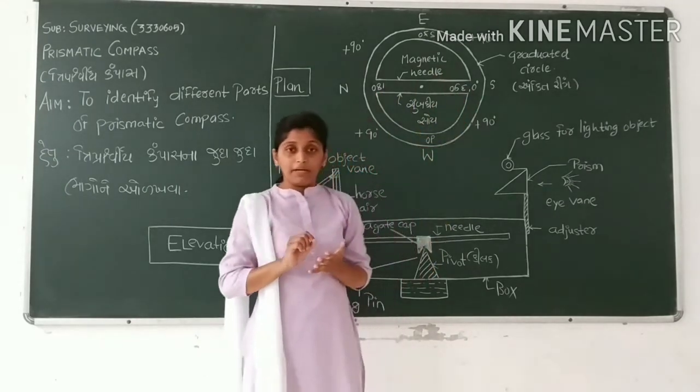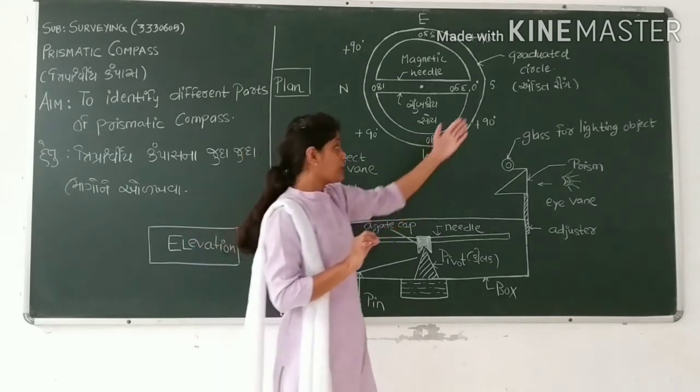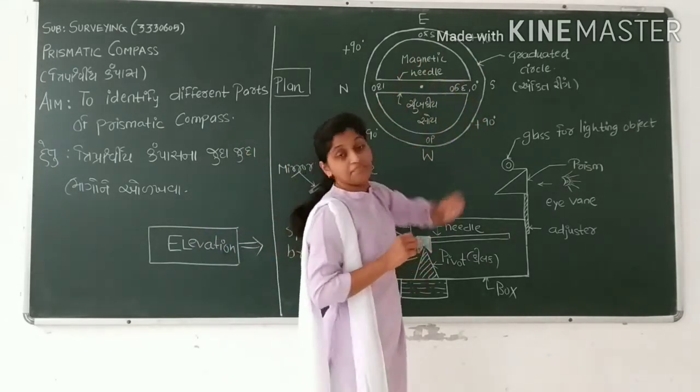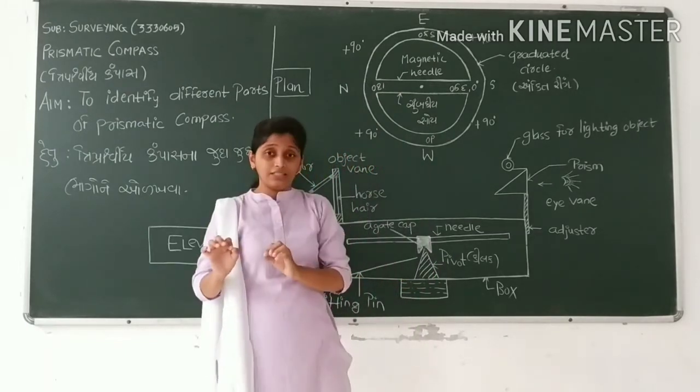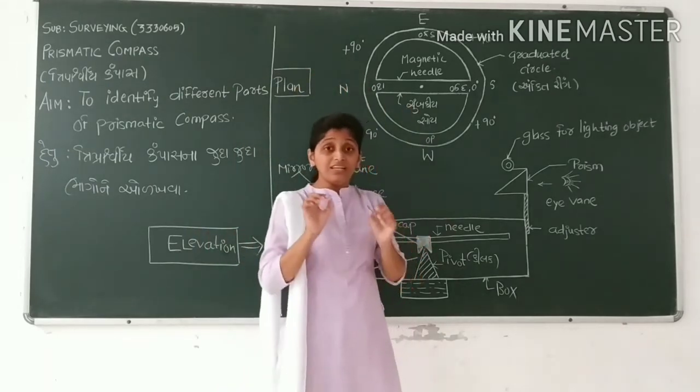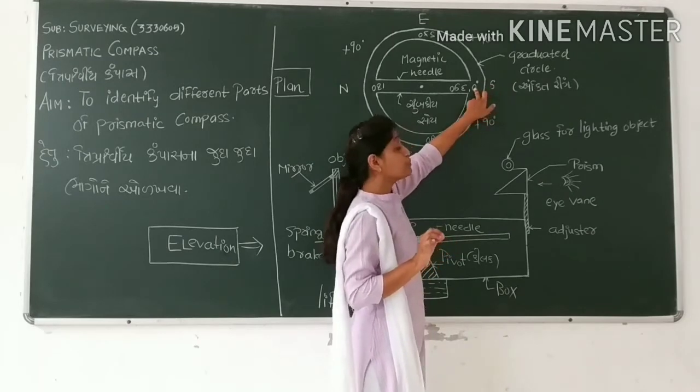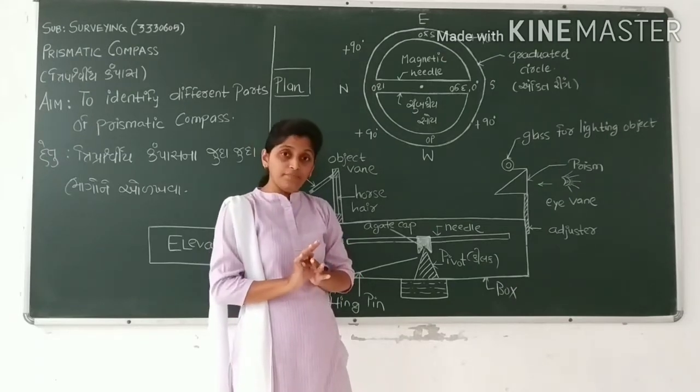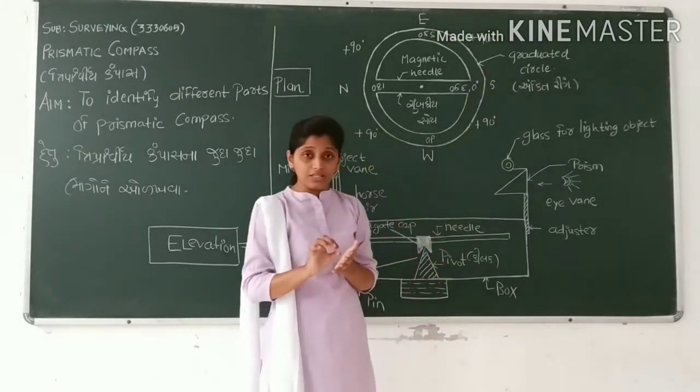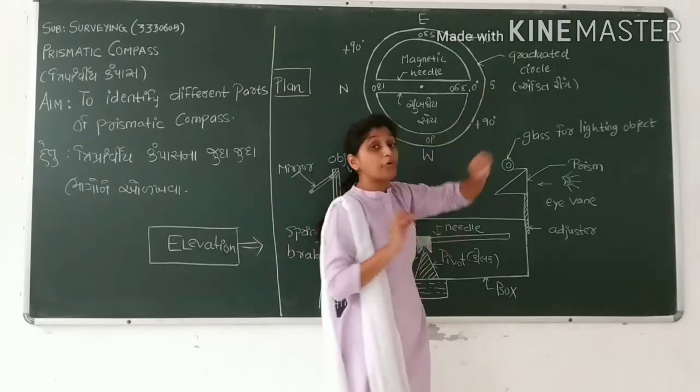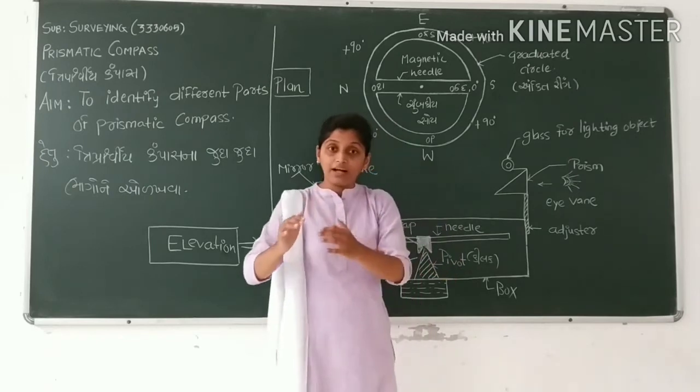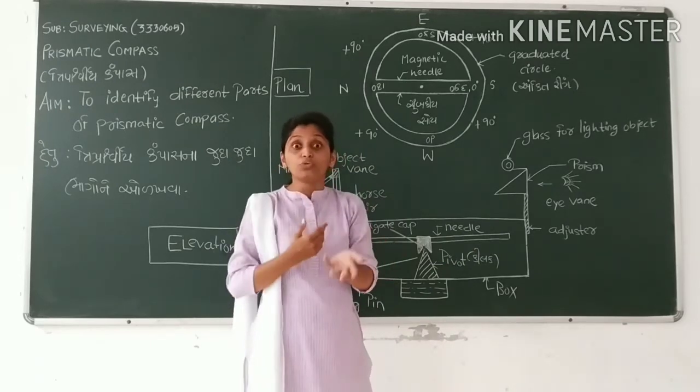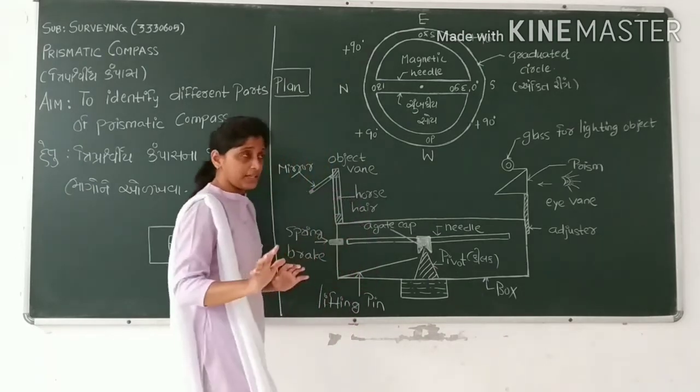The graduations on the circle are inverted. We will start the graduations from the south pole. In the prismatic compass, the graduated circle graduations start at 0 degree always at the south pole. The graduations are marked clockwise, and all graduations are inverted.